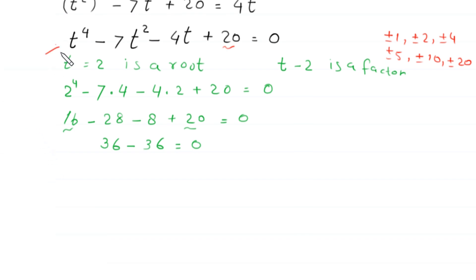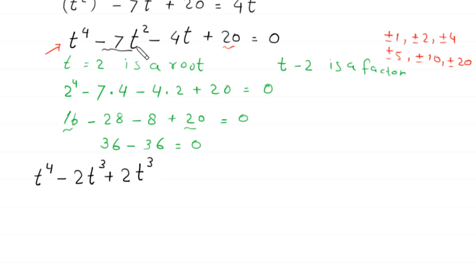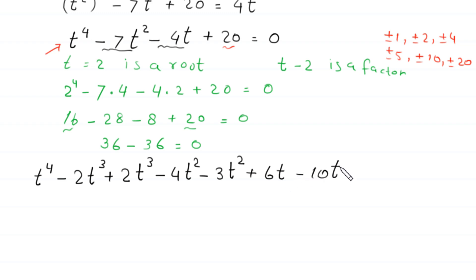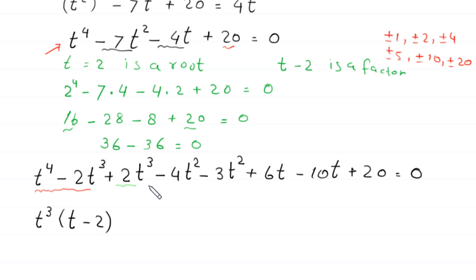We rewrite the equation as t to the power 4, and we add and subtract 2t cubed, and write negative 7t squared as negative 4t squared minus 3t squared. We write negative 4t as plus 6t minus 10t, plus 20, equals 0. From the first two terms t to the power 4 minus 2t cubed, we factor out t cubed, leaving t minus 2. From the next two terms 2t cubed minus 4t squared, we factor out plus 2t squared, leaving t minus 2.